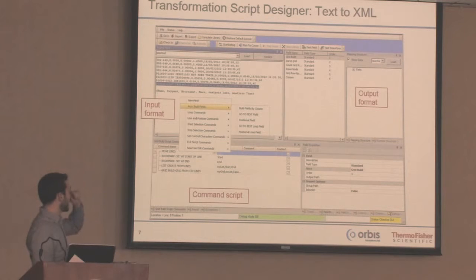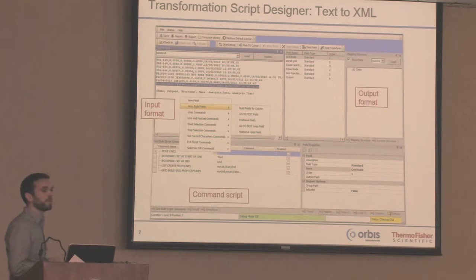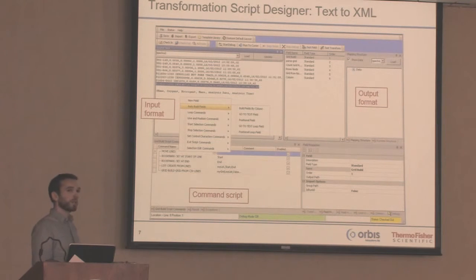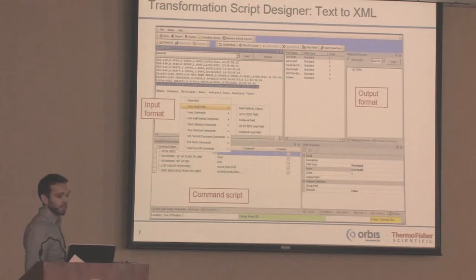There is a right-click option that says auto-build fields. For a very simple transformation you can use an auto-build function that will create this transformation for you automatically. That feature is available on text-to-XML transformations.